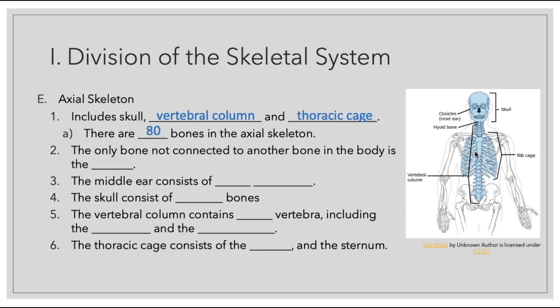The only bone that isn't connected to any other bone in the body is going to be the hyoid bone, located in the area of the neck. If you take your hand, slide it right under your chin and straight back, that is where your hyoid bone is. It is suspended by 22 muscles and ligaments. There are also unique small bones found in the middle ear called the ear ossicles — the malleus, the incus, and the stirrup.